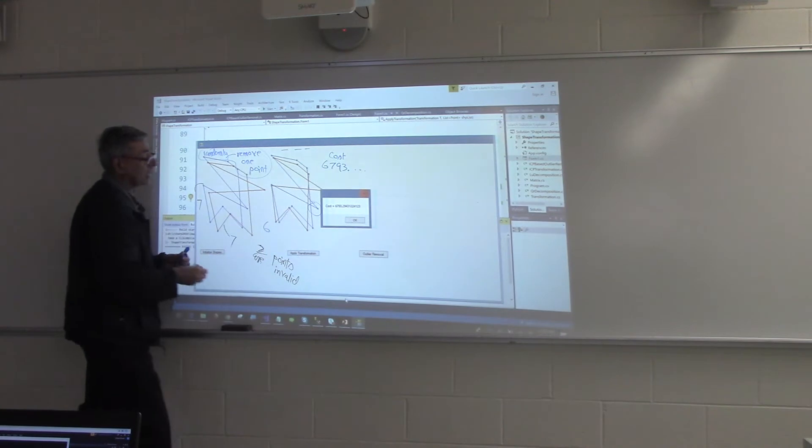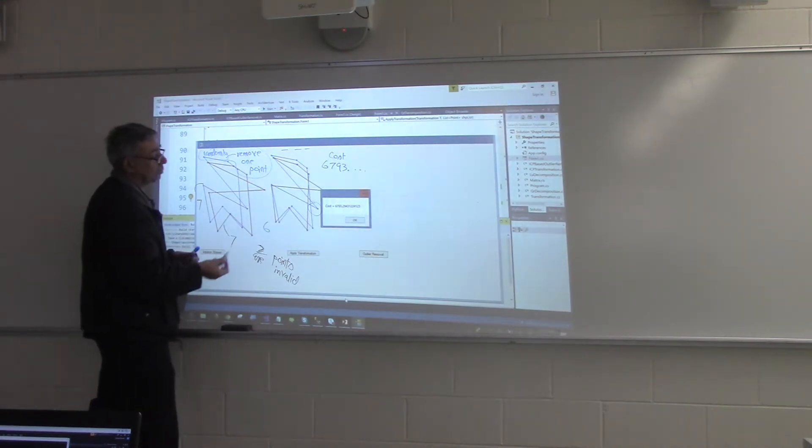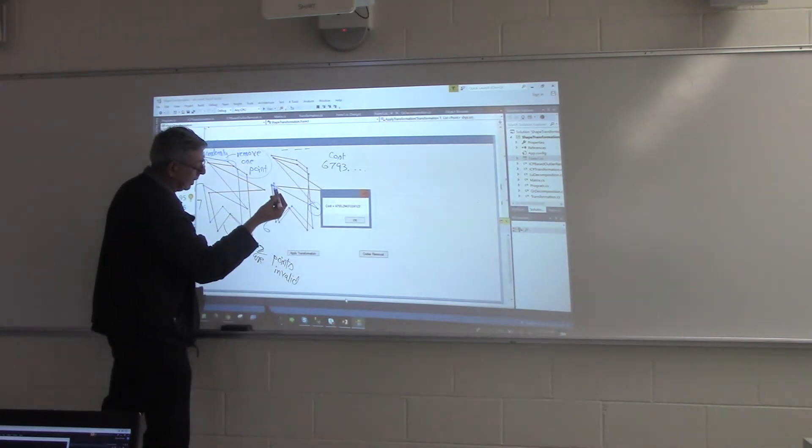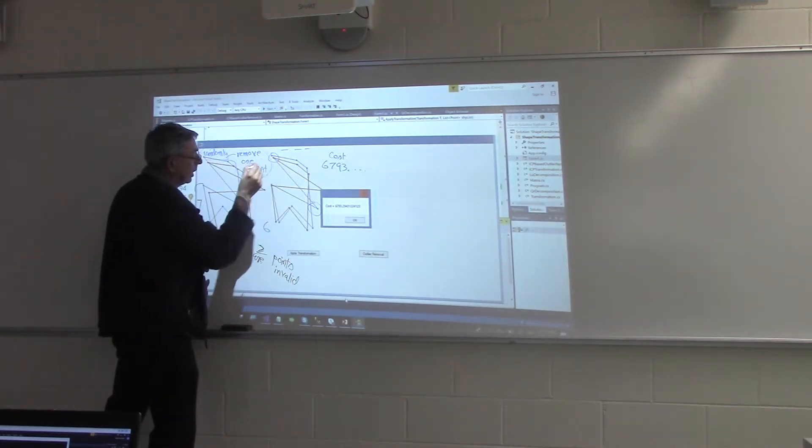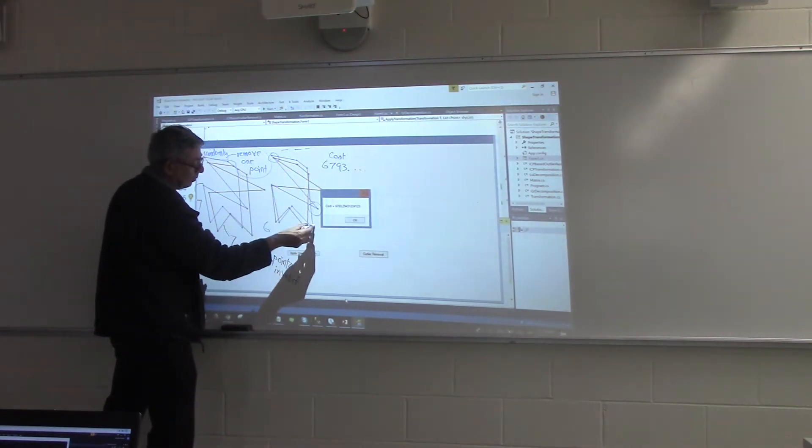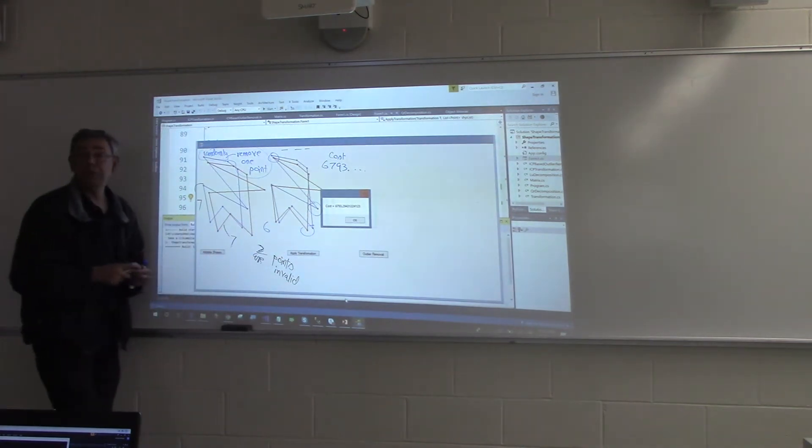So then I'll be left with six. Very similarly later on, maybe there will be another point over here. I don't know which one, but let's pretend it's one of these. So if I remove that, the cost will further decrease.